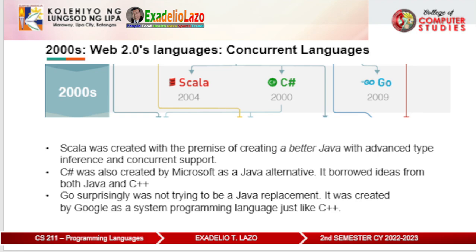Scala was created with the premise of being a better Java, with advanced type inference and concurrent support. Type inference reduces the boilerplate of writing statically typed languages — this was a game-changer since Java was constantly criticized for being bloated. The concept of type inference is so important that it influenced most programming languages in the decades to come. C# was also created by Microsoft as a Java alternative, borrowing ideas from both Java and C++, trying to create a language with the best of both worlds. It was the most popular language for Microsoft's .NET platform, powering development of Microsoft Windows desktop applications and Windows server-based web applications. The game engine Unity also uses C# as its primary scripting language.